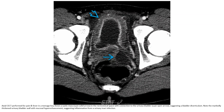Contrast-enhanced CT performed for pain and fever in a teenager shows a cystic mass in the retrovesical space with connection to the urinary bladder, suggesting a bladder diverticulum. Note the markedly thickened urinary bladder wall with mucosal hyperenhancement, suggesting inflammation from a urinary tract infection.